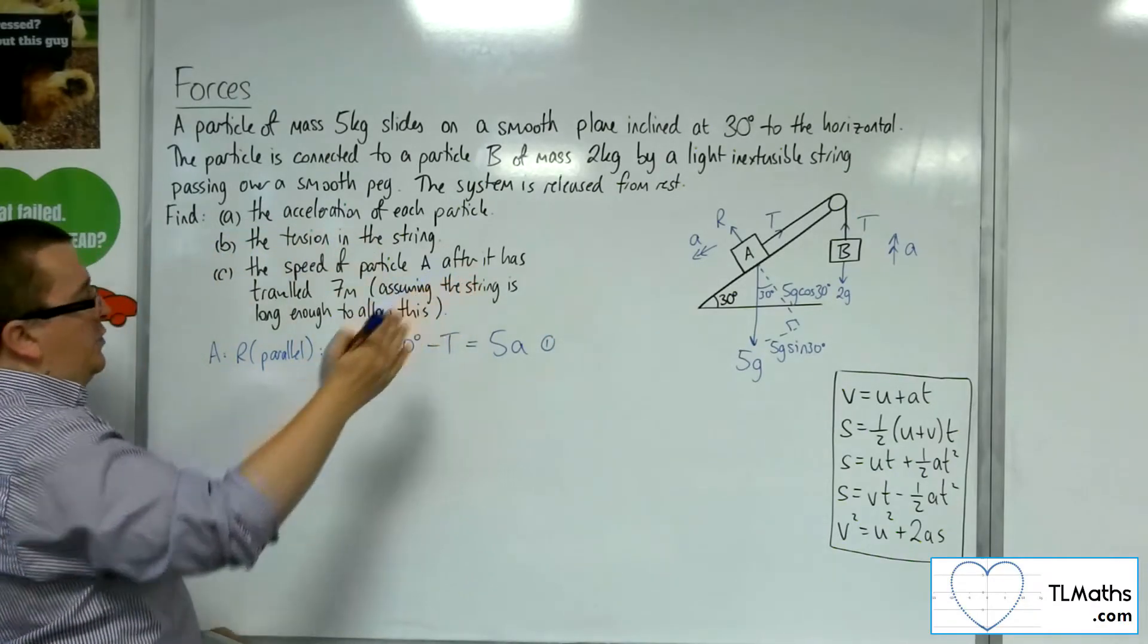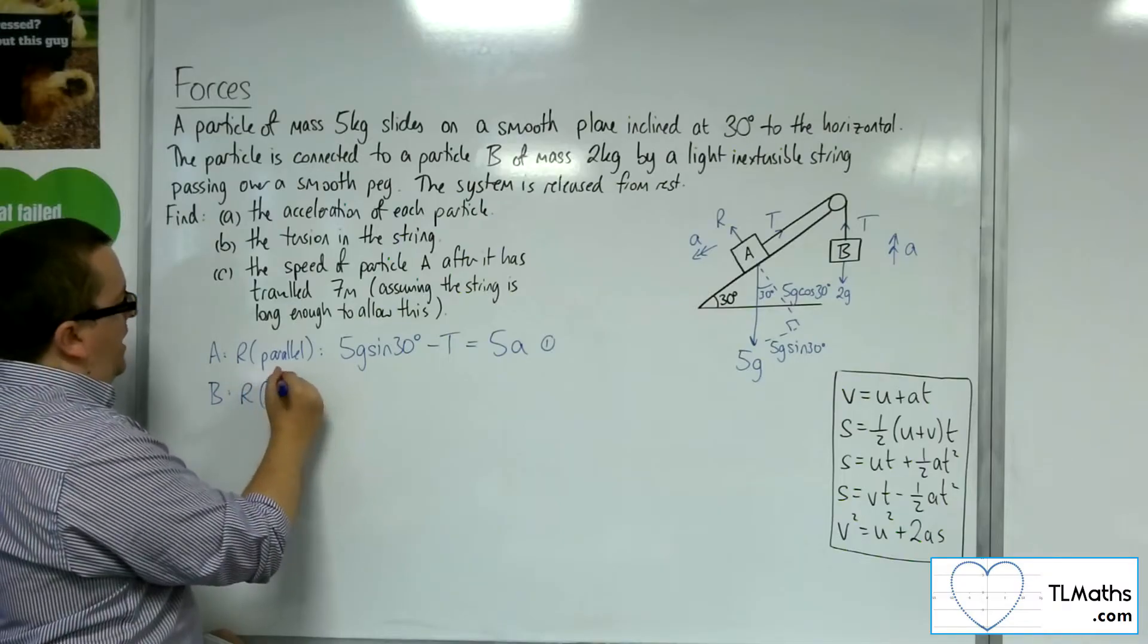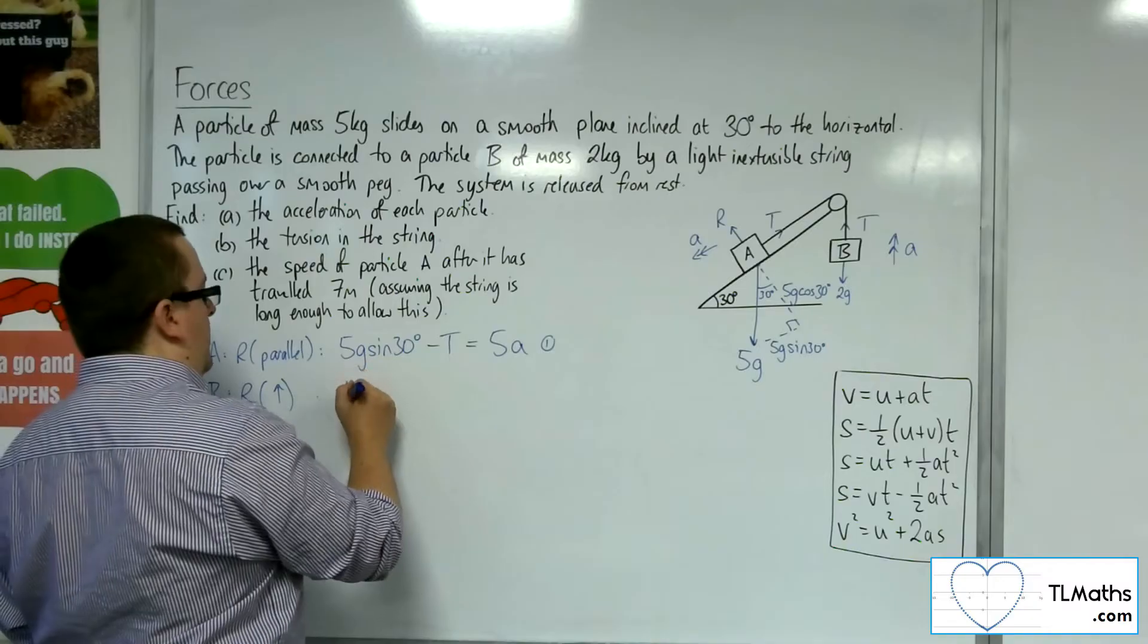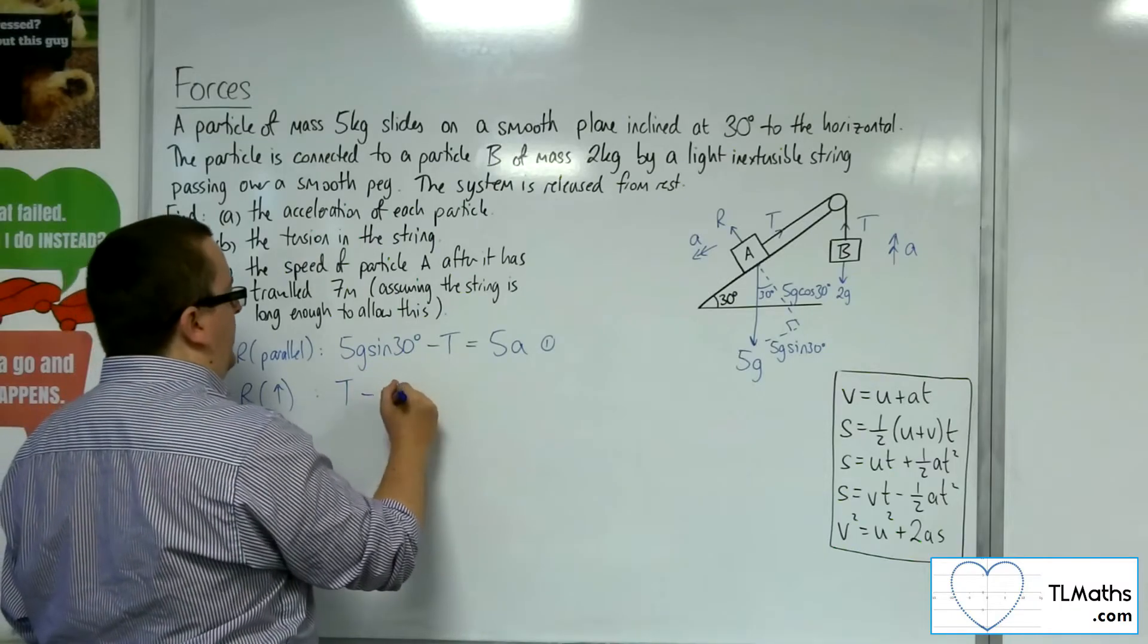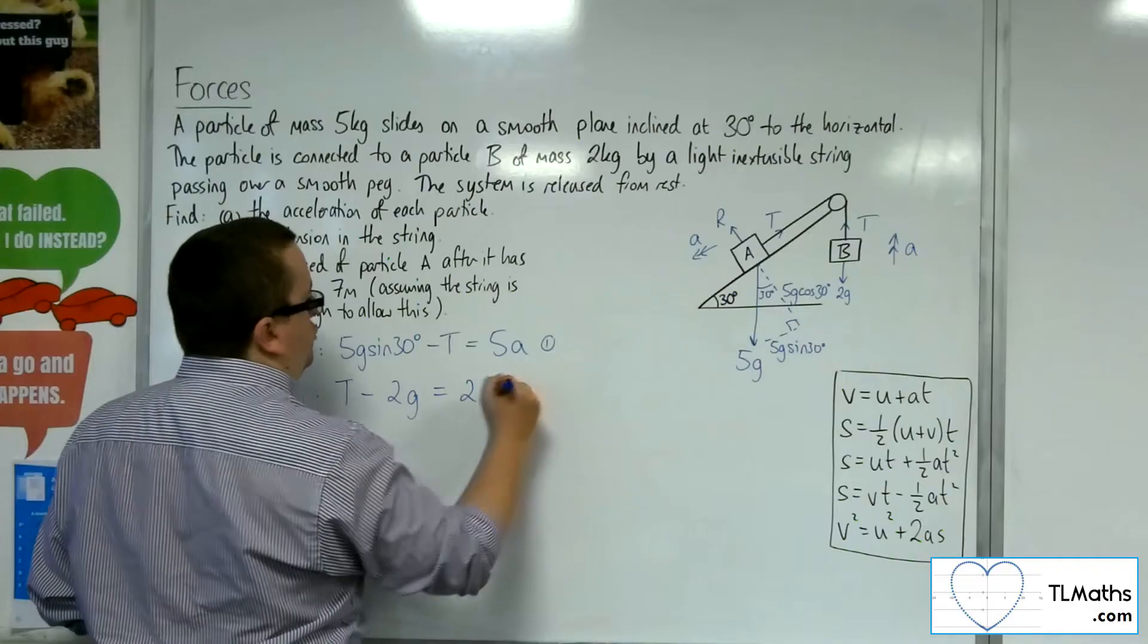Let's now have a look at particle B. For that, I'm going to resolve upwards, taking upwards as positive. So I've got the tension working upwards, I've got the weight working downwards, and that's going to be equal to the mass times the acceleration. There's your equation number 2.